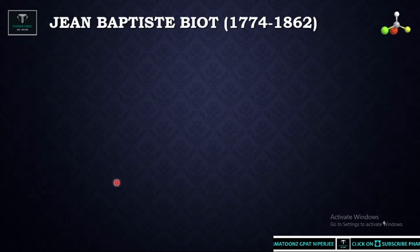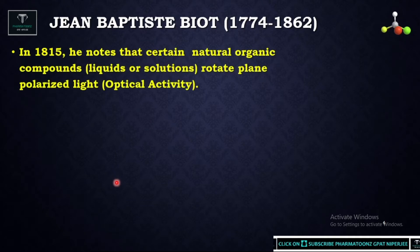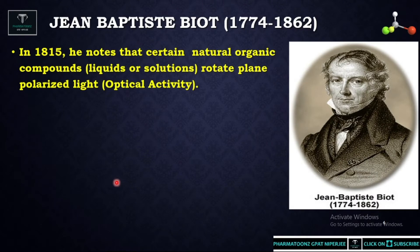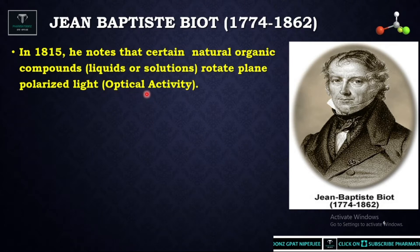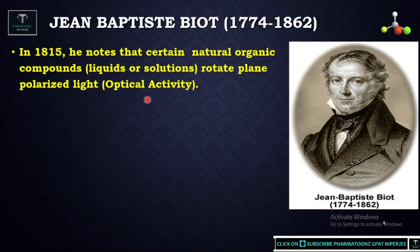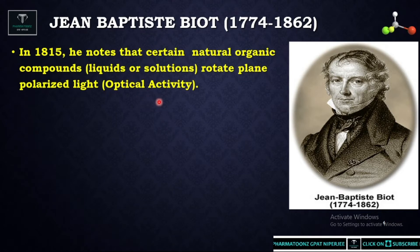The next scientist was Jean Baptiste Biot. He noted that certain natural organic compounds, whether in liquid or solid form, can rotate plane polarized light. Such compounds are called chiral compounds, or optically active compounds, because they exhibit optical activity. This was the conclusion from Jean Baptiste Biot.